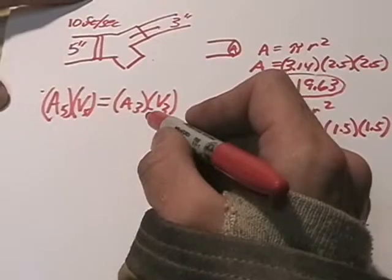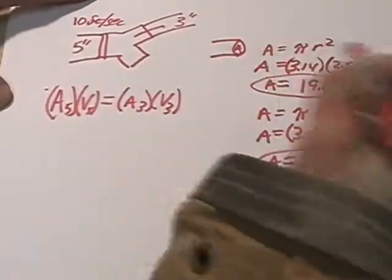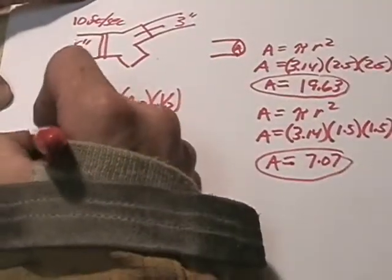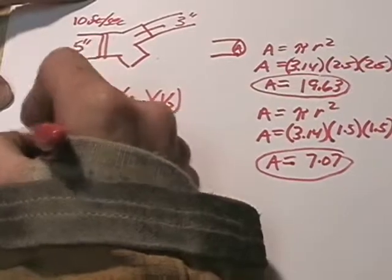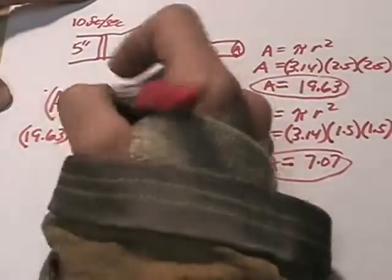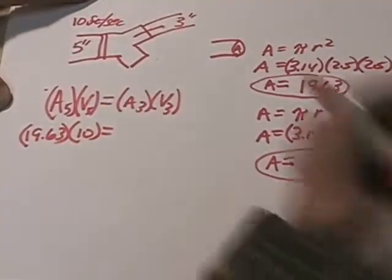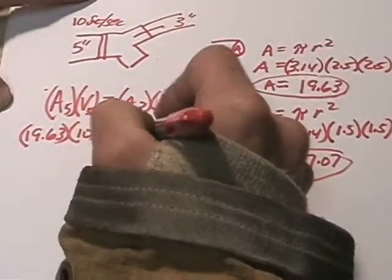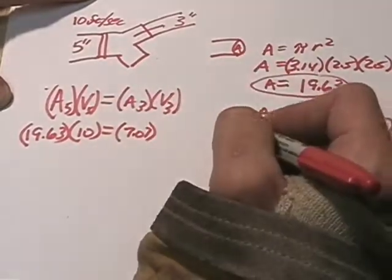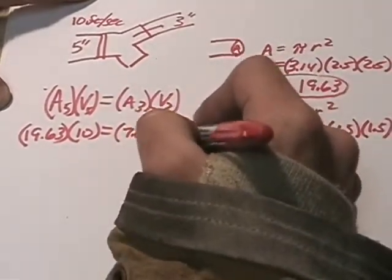So what we'll do is fill in the numbers that we know. We know the area of the 5-inch is 19.63, and the velocity of the 5-inch is 10 feet per second. We know the area of the 3-inch is 7.07, but we don't know the velocity of the 3-inch. That's the unknown.